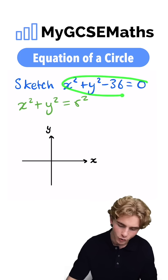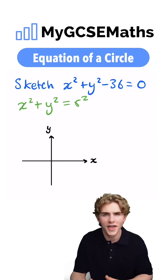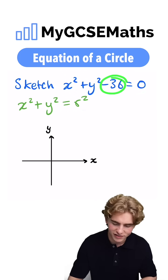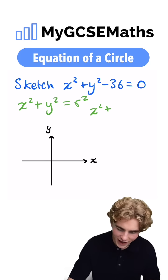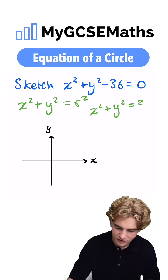We can see in this equation here that we don't have x squared plus y squared equals r squared, but we could add 36 to both sides and then it would be in that form. So we add 36 to both sides, we get x squared plus y squared equals 36.